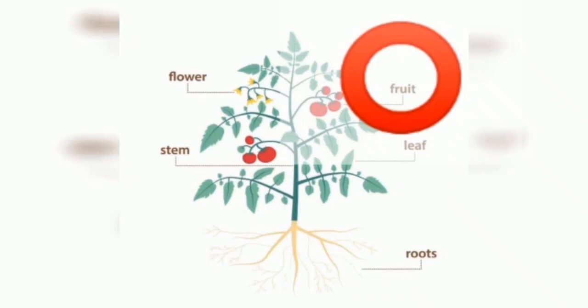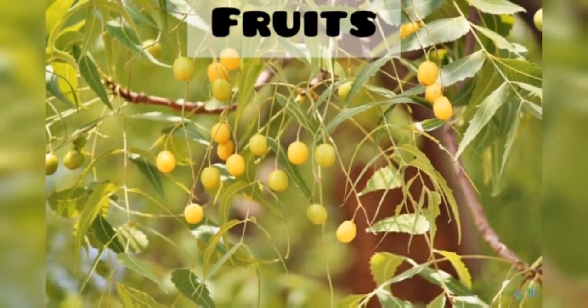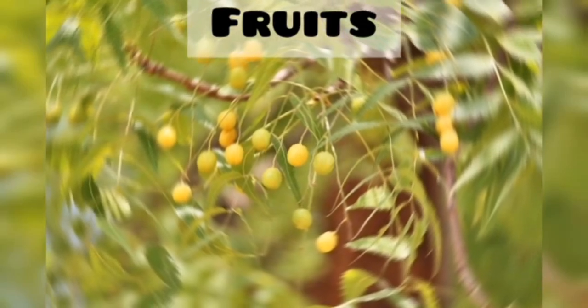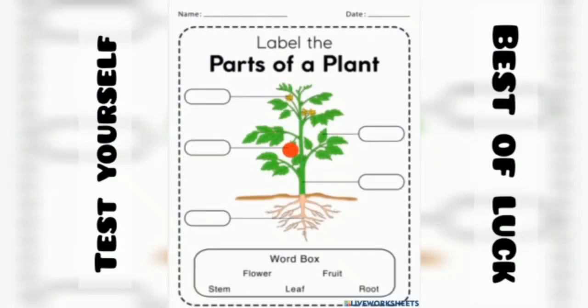Fruits. They are the ripened ovary found in flower after fertilization. The ovules after fertilization make the seed which is then fertilized to form new plants.